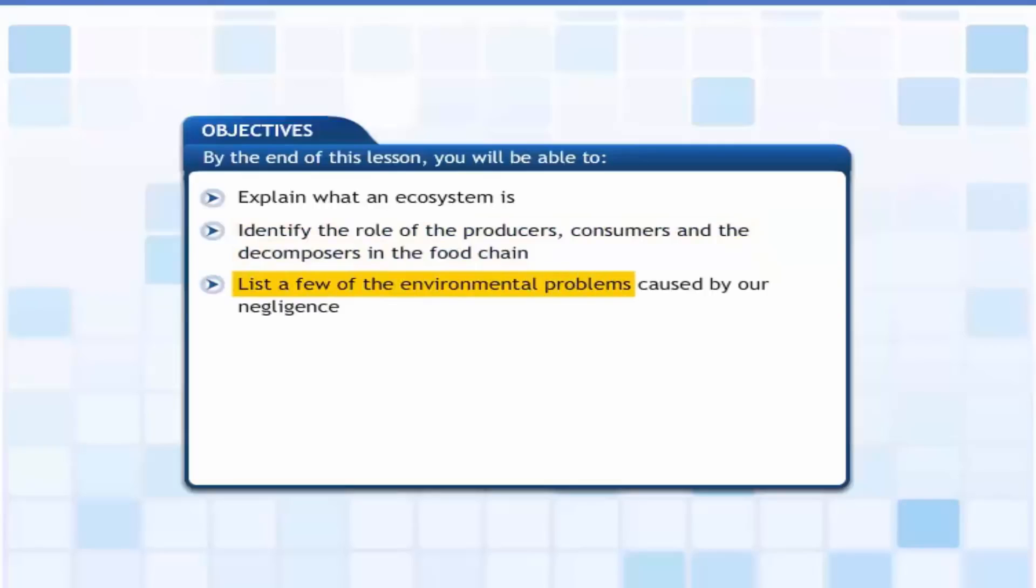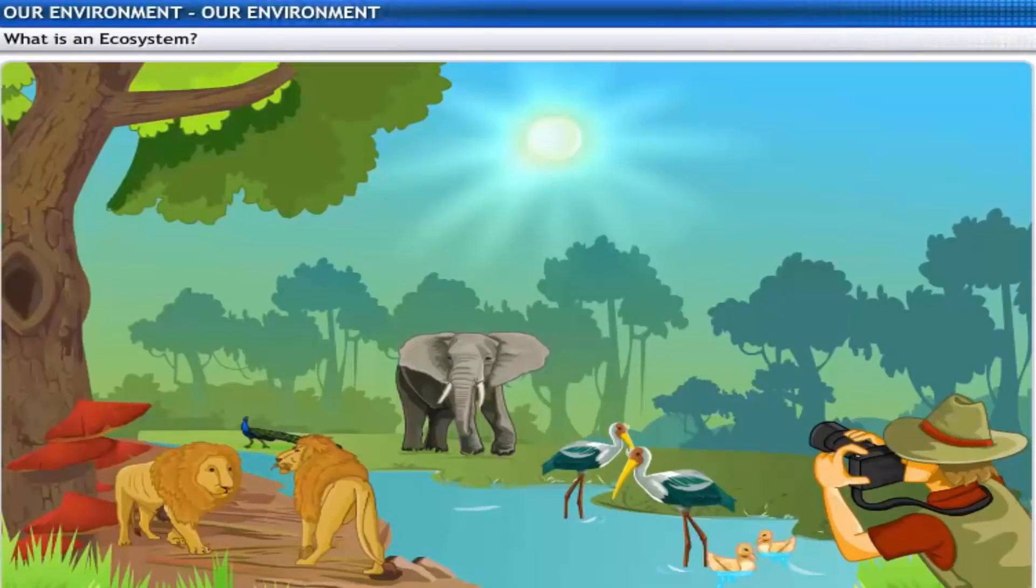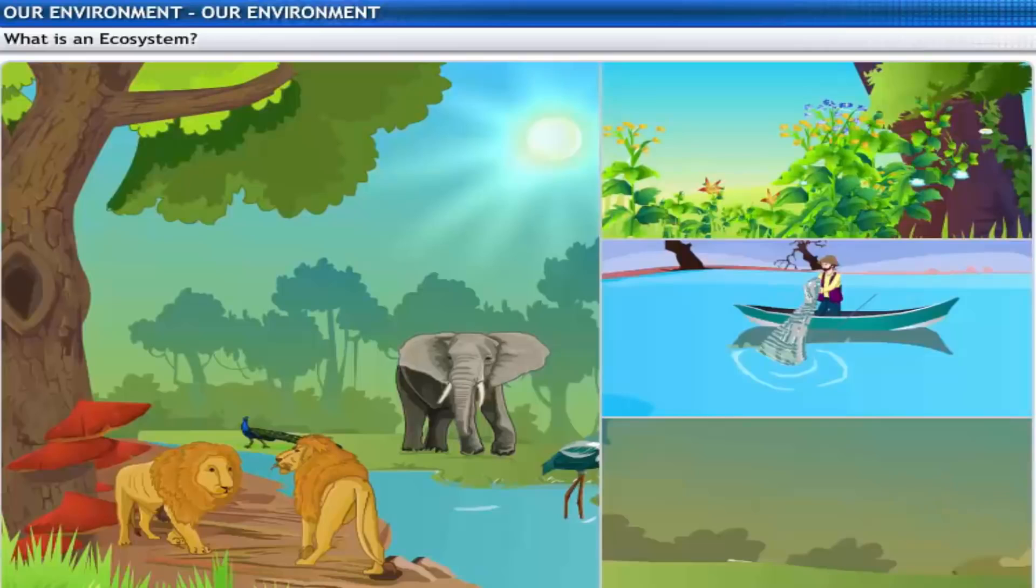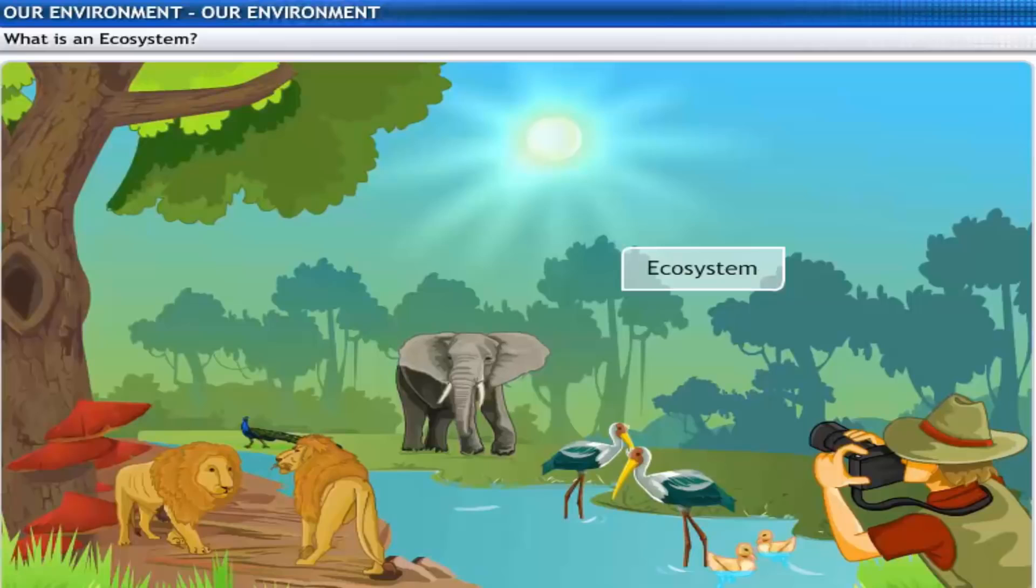And list a few of the environmental problems caused by our negligence. The environment comprises the air you breathe, the water that covers the surface, the animals and the plants around you, and much more. The environment is made up of various ecosystems like gardens, lakes, forests, etc. An ecosystem is a place where living organisms and the non-living components of the environment interact with each other.